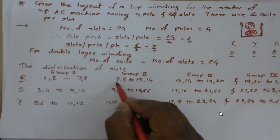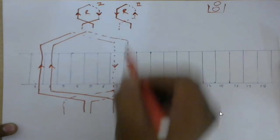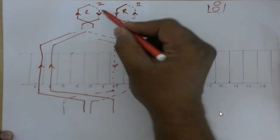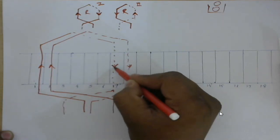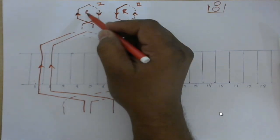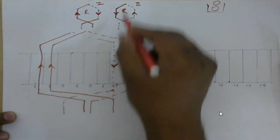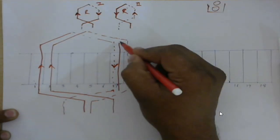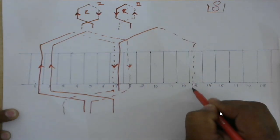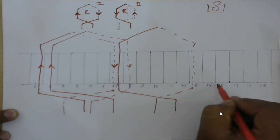The second group goes from 7 to 13 and 8 to 14. If I try to place coil number 1 here, the current direction at slot 7 would be upward, but it needs to match the downward direction already there — so that is not feasible. Therefore, I must place coil number 2, where coil side 1 has current flowing downward, matching the existing direction. I place this coil from 7 to 13 and from 8 to 14.